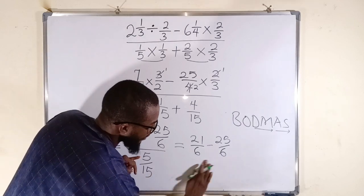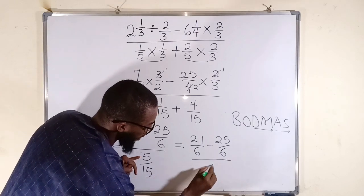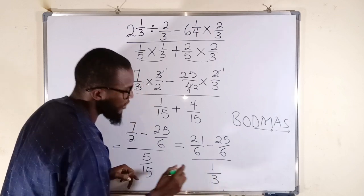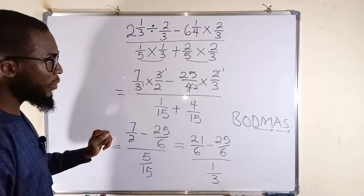5 into 5 is 1, right? So we have 1. Divide by 5 into 15 is 3. Let's move to the top and continue.